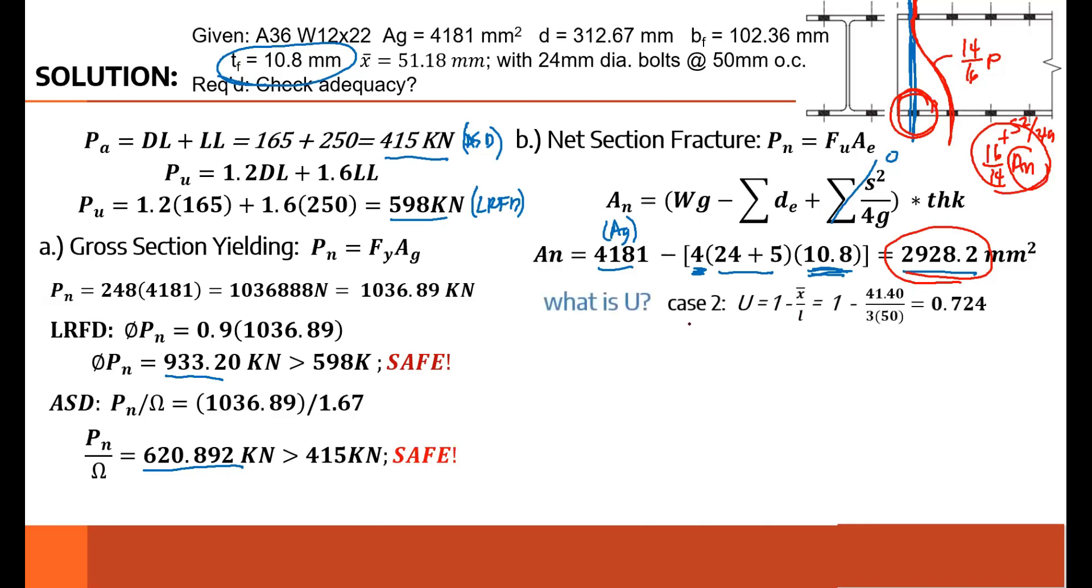So with that as my critical net area, 2928.2mm², what is the capital U to get the effective area AE? The capital U, the shear lag factor, can be solved from Case 2 using the formula: 1 minus X-bar divided by L. The L is from the first to the last distance of the connector. So that's three times 50: 50, 50, 50. So 3 times 50 is our L. The question is, how did we get 41.4? It was not given. For the meantime, accept 41.4. Later, I'll explain where I got 41.4. Therefore, capital U comes out to 0.724 based on the Case 2 formula.